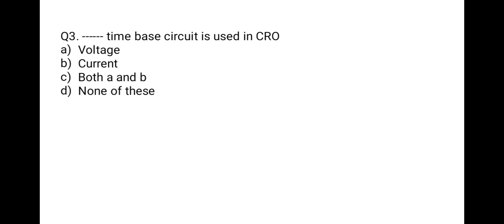The next question: time-based circuit is used in CRO for which of the following? Options: voltage, current, both A and B, or none of these. When we look at the front view of a CRO there are two knobs: the volts-per-division knob and the time-per-division knob. So the correct option is A: voltage. Time-based circuit is used in CRO for voltage.